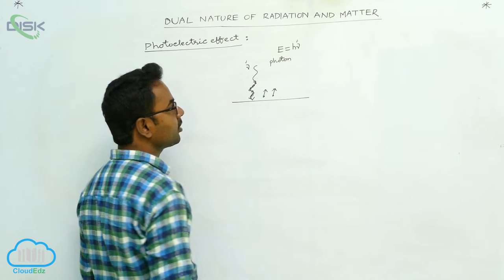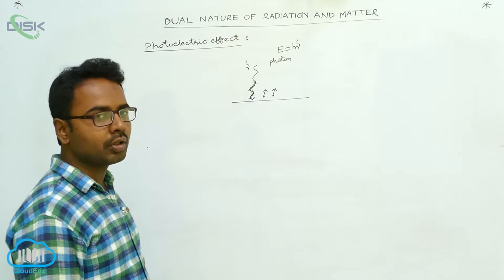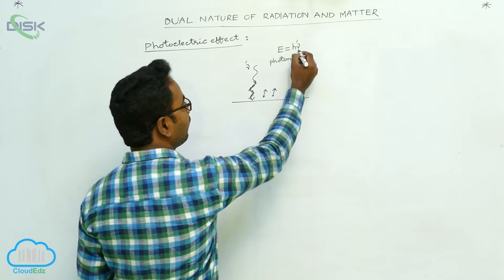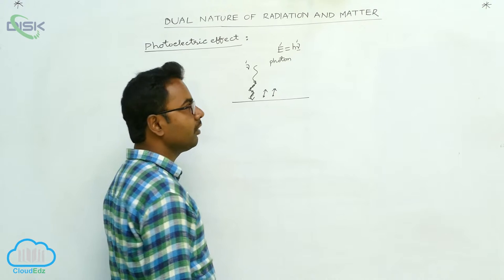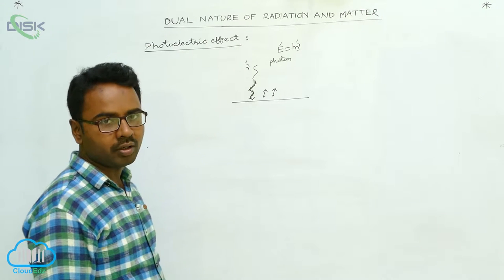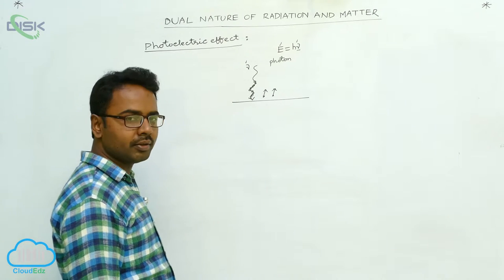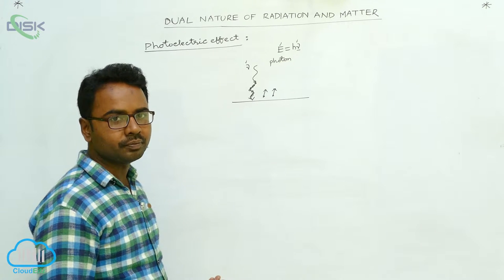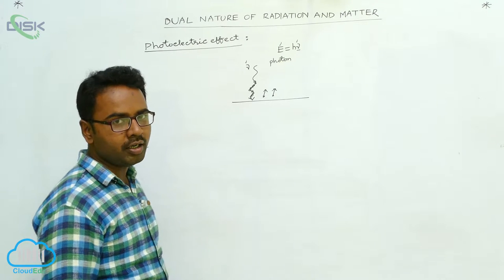The energy of a photon depends on the frequency of the incident radiation — if the frequency is more, the energy of the photon will be more; if the frequency is less, the energy will be less. To eject an electron from the metal surface, the photon must have a sufficient amount of energy, otherwise the electron cannot come out.